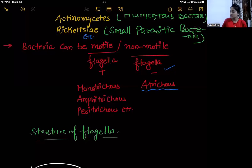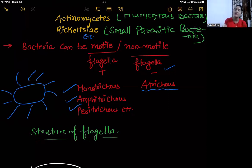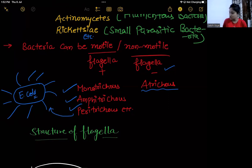If there is a single flagellum, we say monotrichous. If there are two flagella, it is amphitrichous. If flagella are present all over the whole periphery of the cell surface, it is called peritrichous. Don't confuse these terms — they are all about flagella arrangement. Peritrichous flagella are found in E. coli, so for a match-the-following: peritrichous = E. coli.